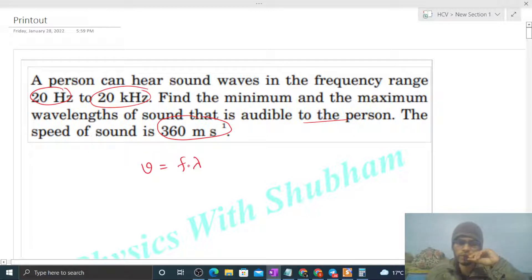So you can see the speed of sound is simply frequency into wavelength, right? Now wavelength will be speed divided by frequency. Speed is constant, its value is given 360, so you can write wavelength is equal to 360 divided by frequency.